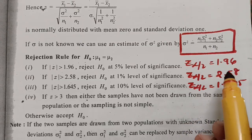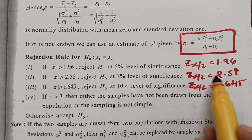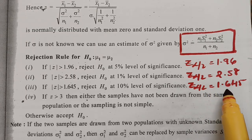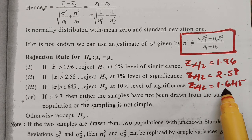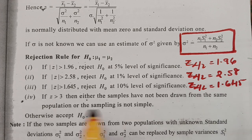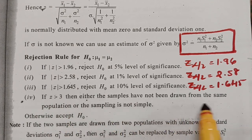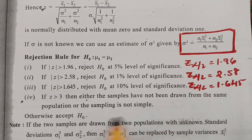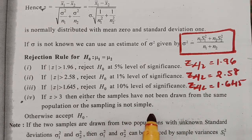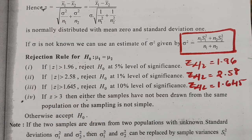This is the table you have to remember at 5%, 1%, and 10% level of significance. If mod z is greater than 3, then either the samples have not been drawn from the same population or the sampling is not simple. So these are the five working rules: null hypothesis, alternate hypothesis, level of significance, test statistics, and the conclusion.